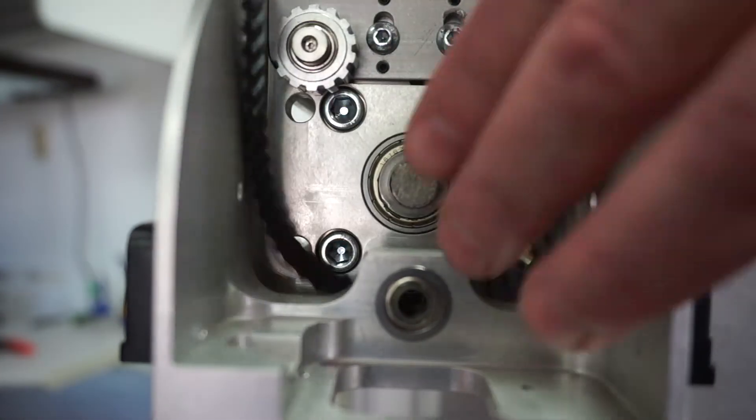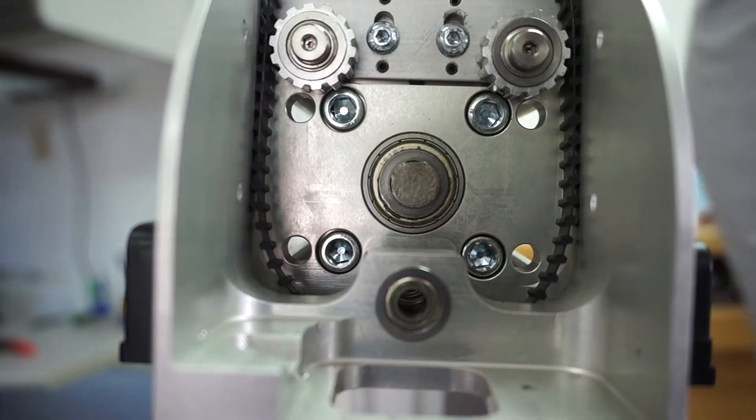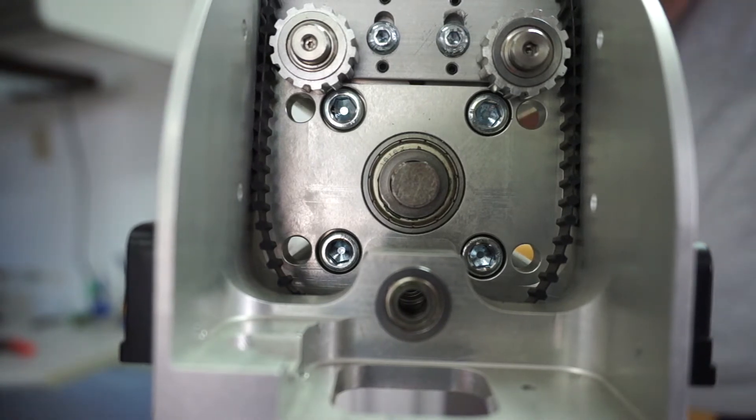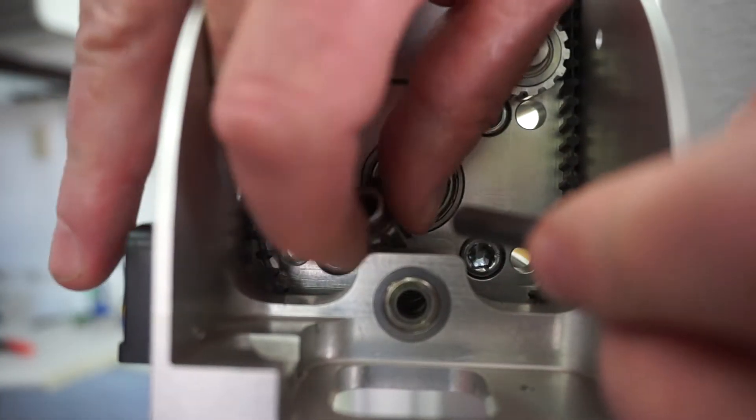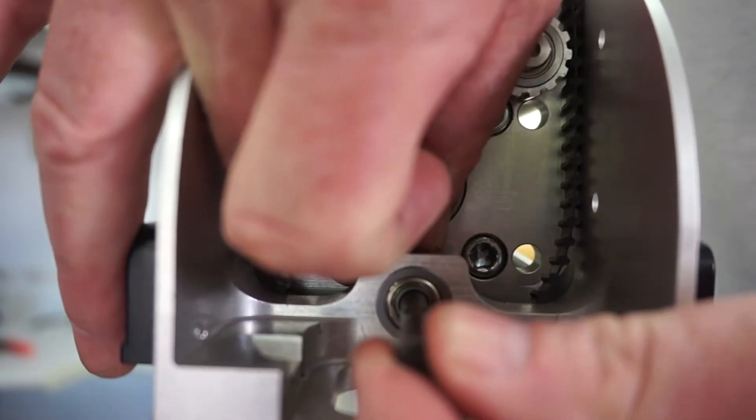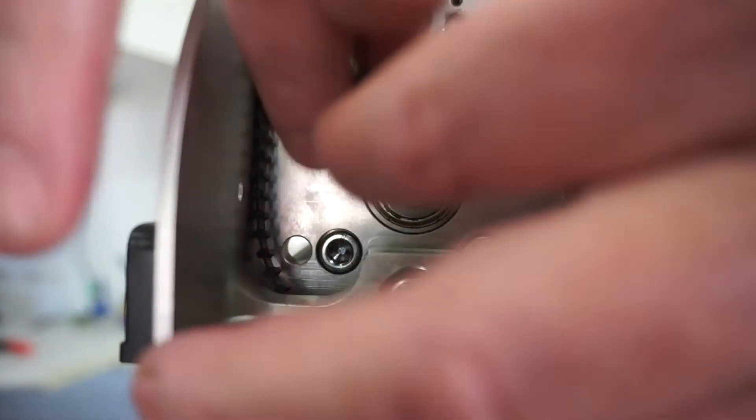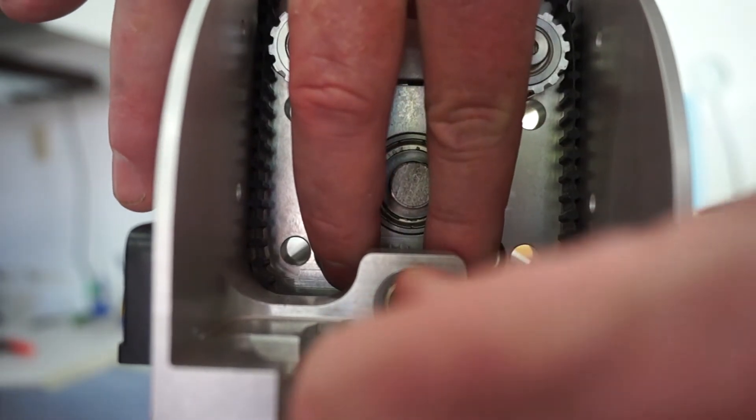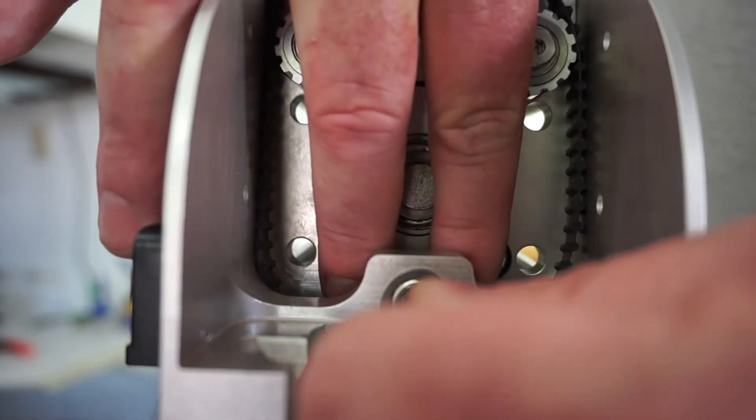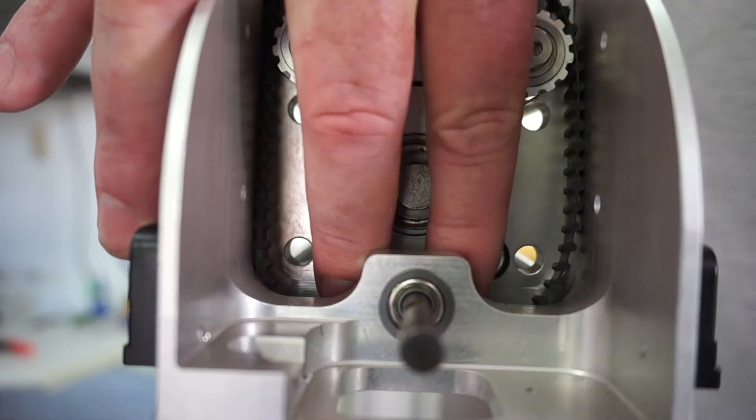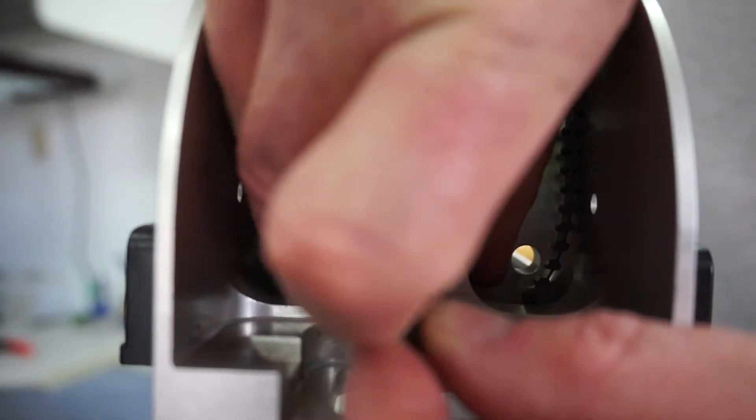So basically you're just going to drop your belt in the slot. Again, I apologize for my fingers being in the way. But when you go to put this back in, there's a slot, a little notch cut out of the shaft. You want to run that back in right where the screw is. The little notch right there is going to go where the set screw is.